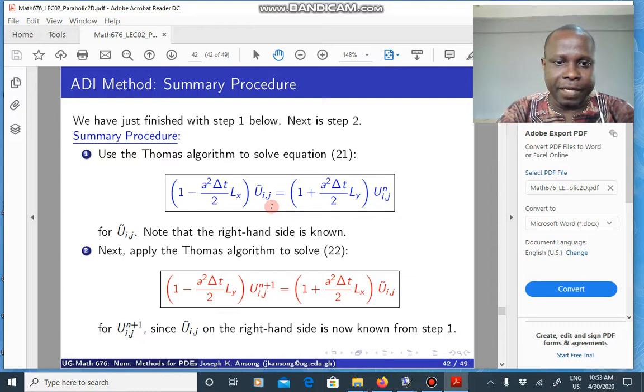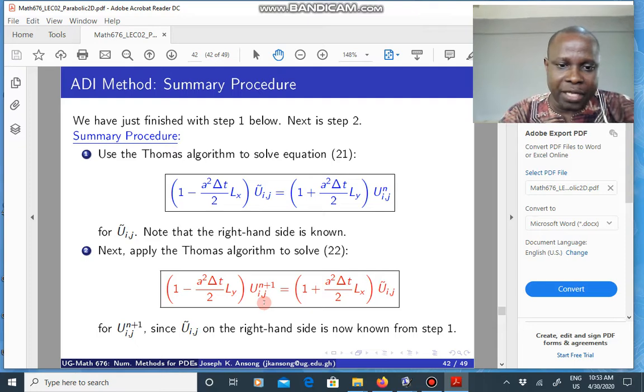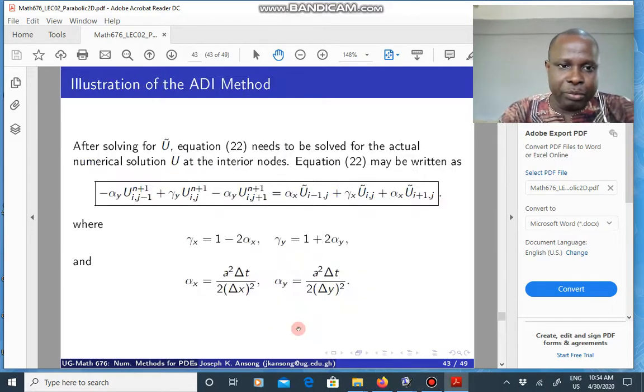In this next step we want to look at the second step of the ADI method where now that we know u tilde, we plug it in here and then solve finally for u at our next time level n plus one. Just as I did for this, we can expand it using the previously defined ly and lx. When you expand them and rearrange terms you will get this equation here.